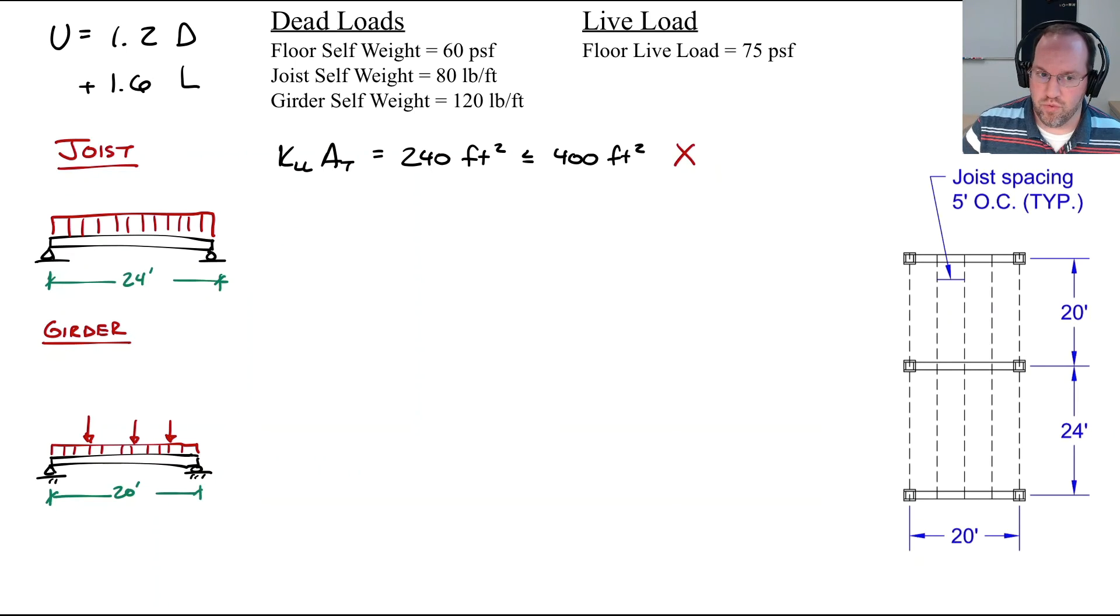Now we can directly apply our load combination. U is 1.2 times the dead load, which was 380 pounds per foot, plus 1.6 times our live load of 375 pounds per foot, to give us a final distributed load of 1,056 pounds per foot.